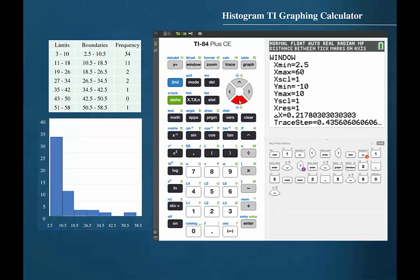Cursor down to scale and enter the class width from the grouped frequency distribution. The width was 8.